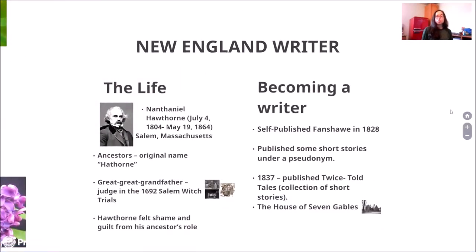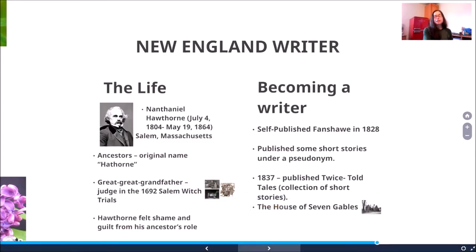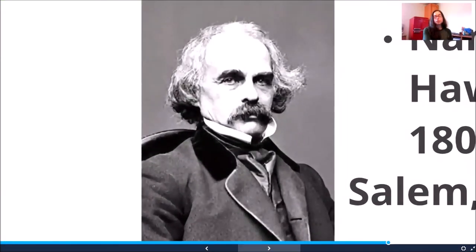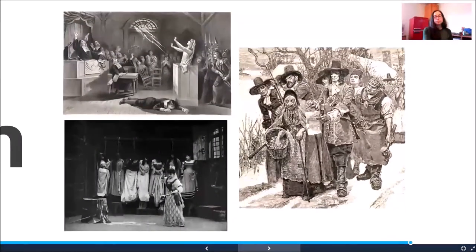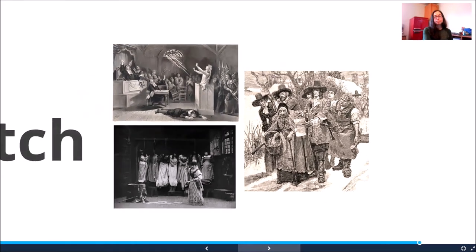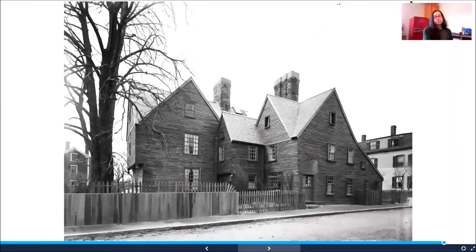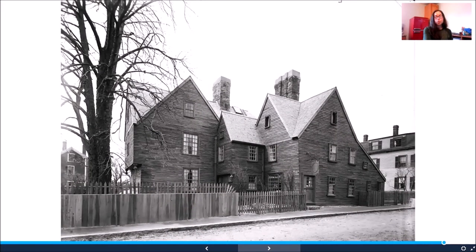Nathaniel Hawthorne was one famous New England writer. He lived from 1804 to 1864 in Salem, Massachusetts. His ancestor's original name was Hathorne, not Hawthorne. His great-great-grandfather was actually a judge in one of the 1692 Salem witch trials, and Hawthorne felt shame and guilt based on his ancestor's role in those trials, sometimes writing that into his stories. He self-published Fanshawe in 1828 and published short stories under a pseudonym. In 1837 he published Twice Told Tales, a collection of short stories, and then he published The House of the Seven Gables.